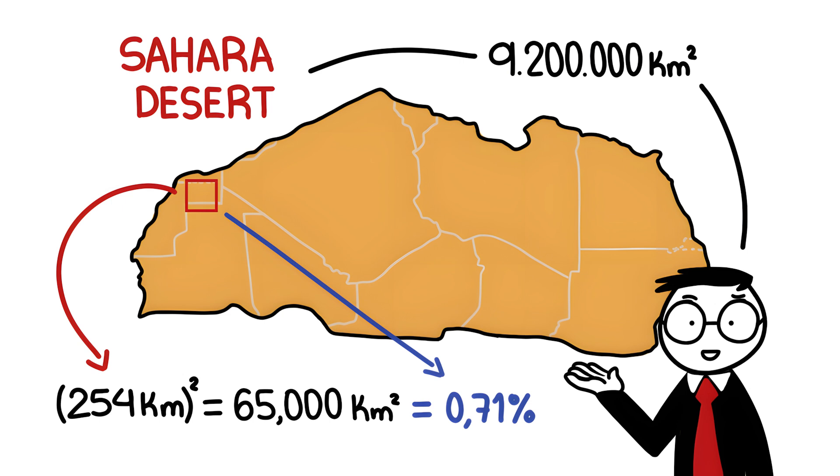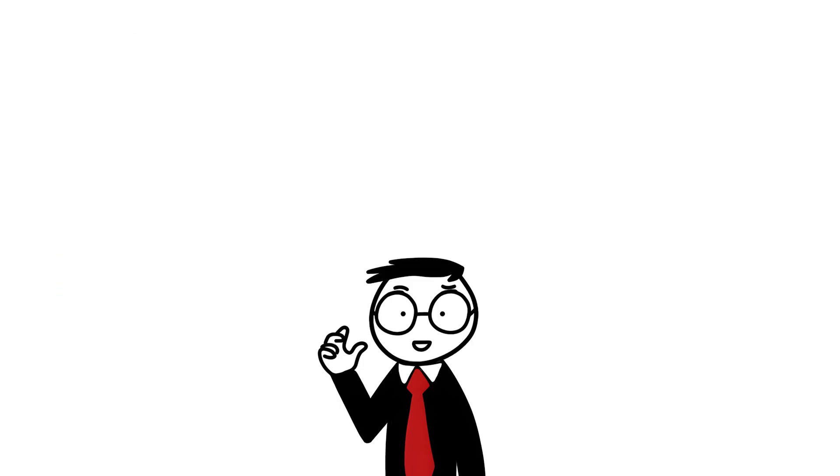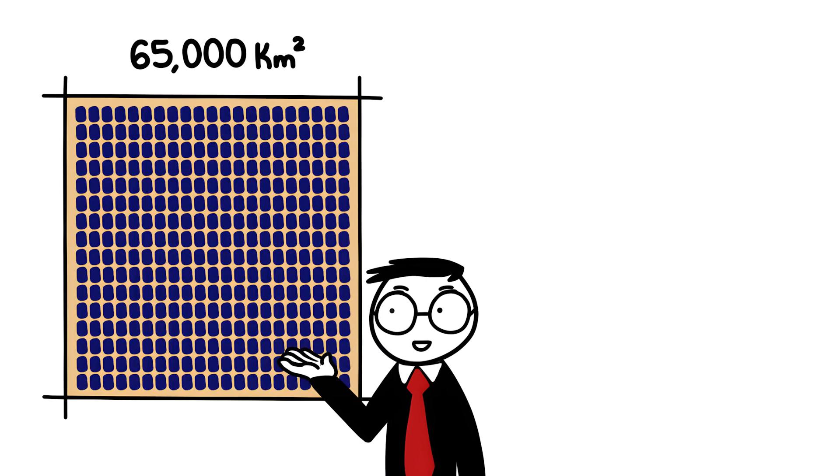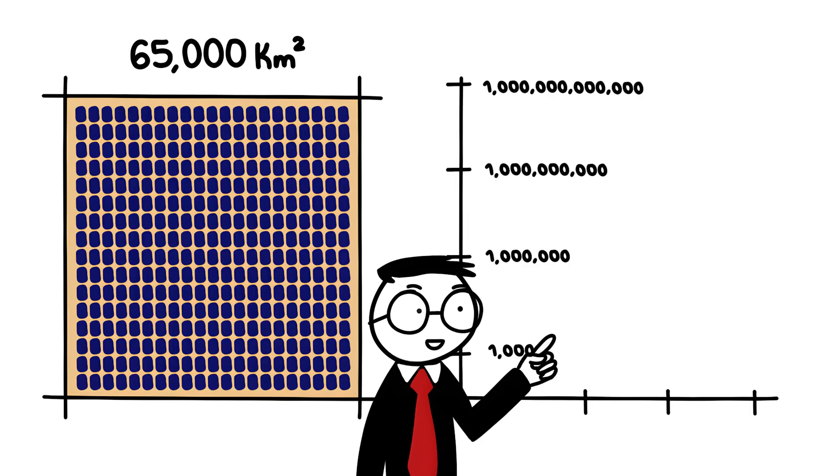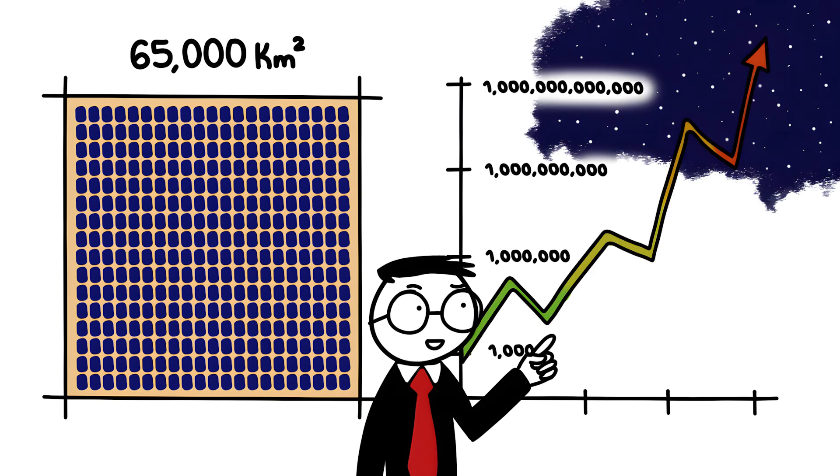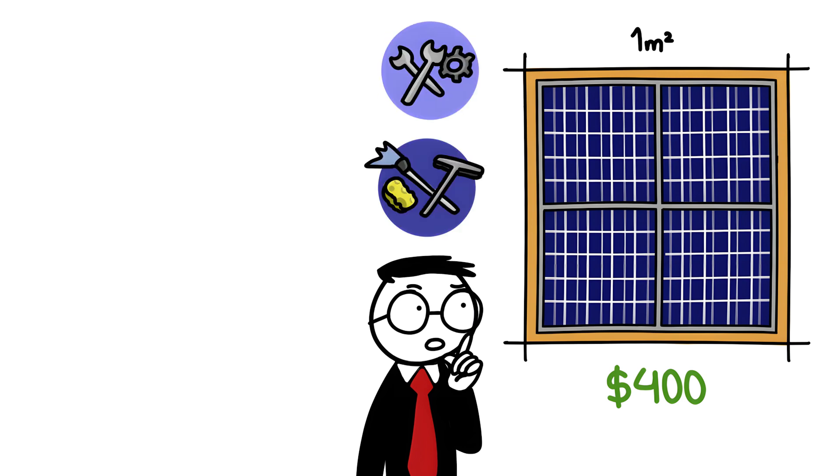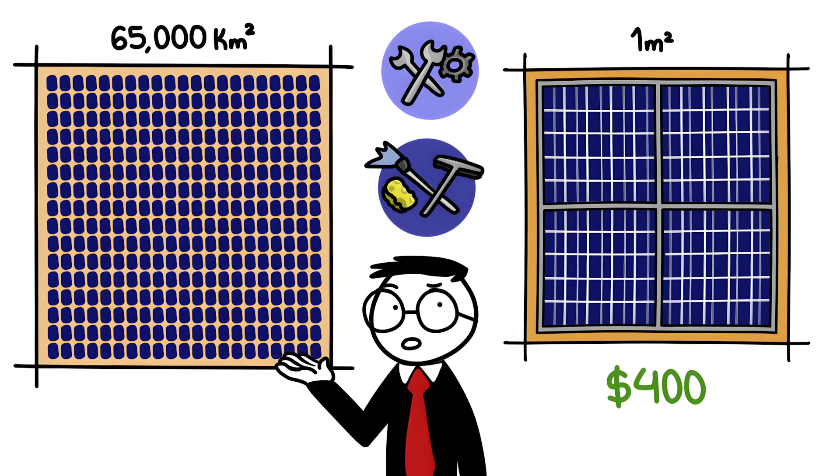So what's the problem? In absolute terms, 65,000 square kilometers completely covered with solar panels is still a lot. Implementing such a project would cause astronomical costs. Assuming that one square meter of solar panels costs $400 including installation, maintenance, etc., said area would cost about 26 trillion euros.